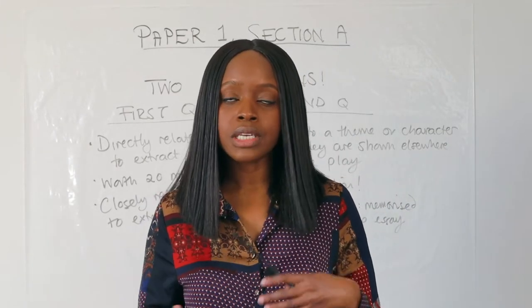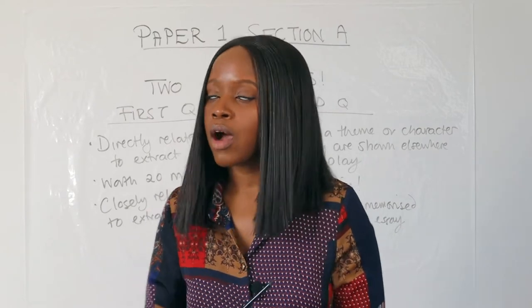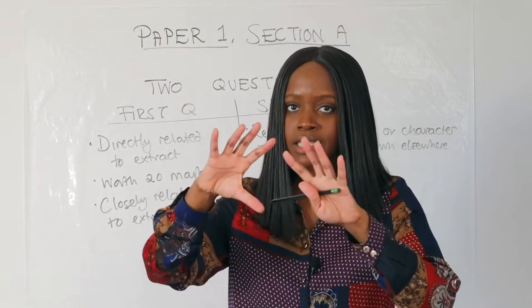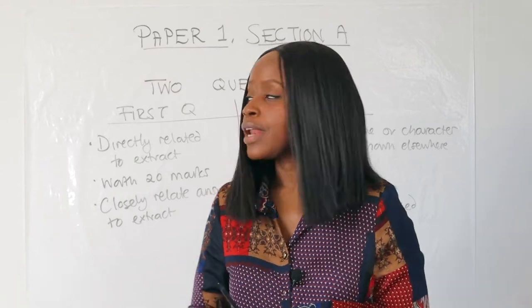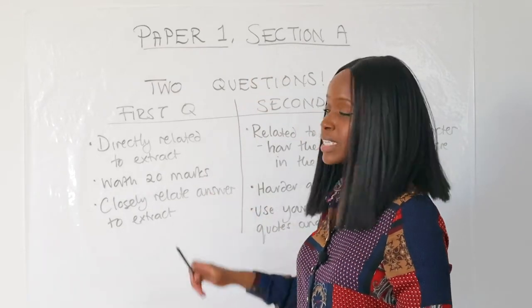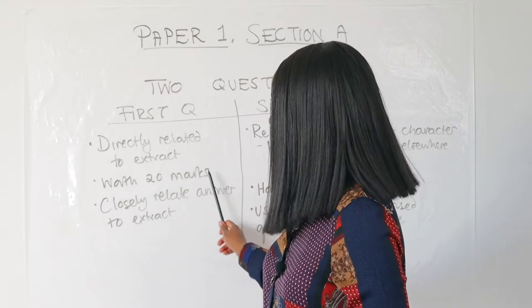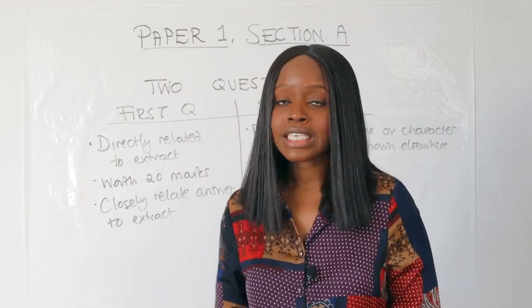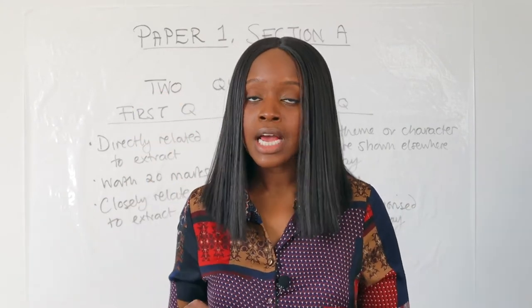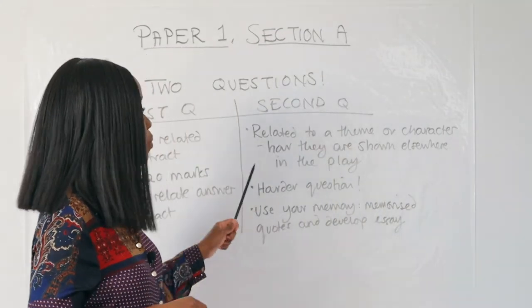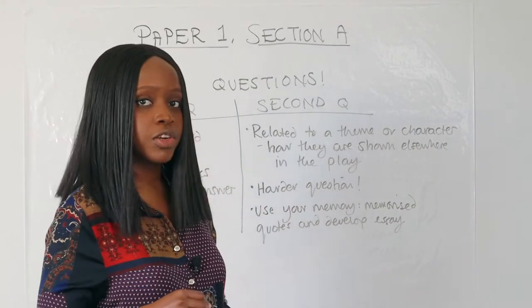In Paper 1 Section A of your literature paper, you have two questions, even if they're on the same text — it's split into two. The first question is directly related to the extract you're going to get. This is the extract question, and it's worth 20 marks. You're expected to closely relate your answer to the extract as you're reading and analyzing it. The second half of the question is related to a theme or a character.